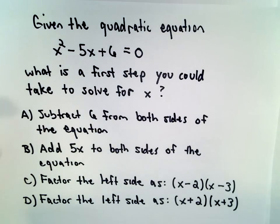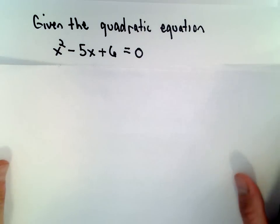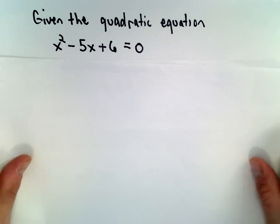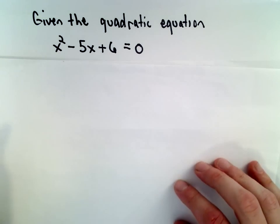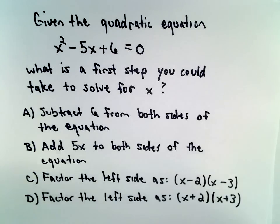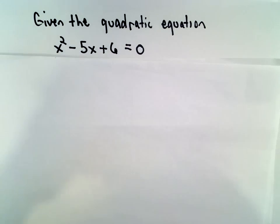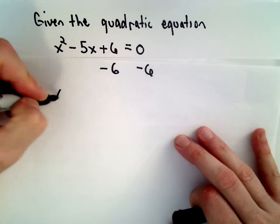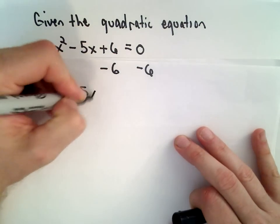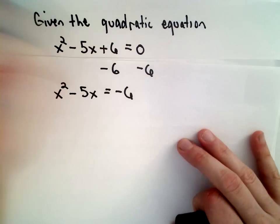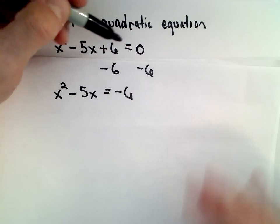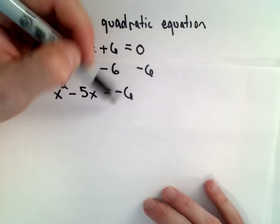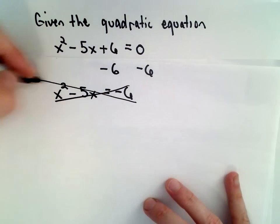We can rule out A and B really quickly. For a quadratic equation, to solve a quadratic equation, you want one side of the equation to be equal to 0. If I subtract 6 from both sides, that's what part A says to do, I'm kind of undoing that good form where one side is equal to 0. I've got this number now on the right side that's not 0. That's not going to be helpful.